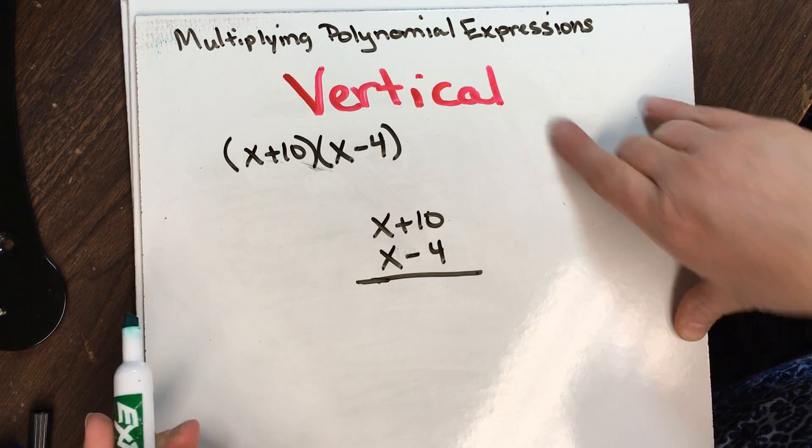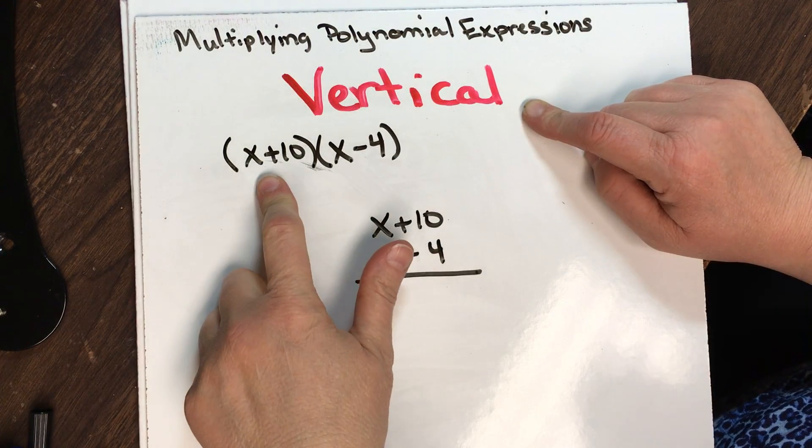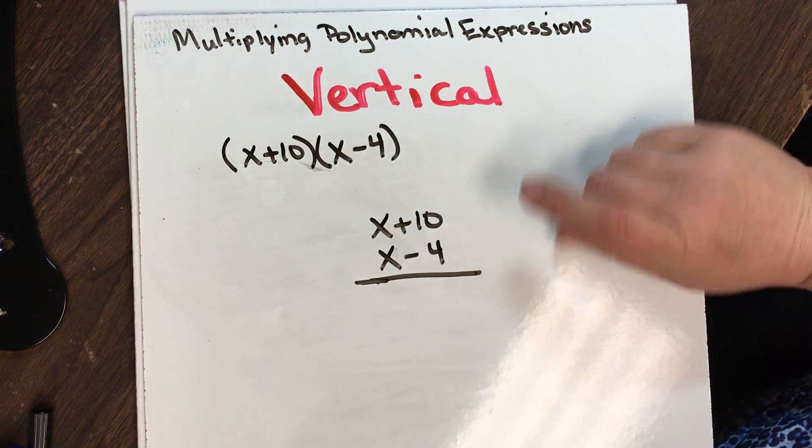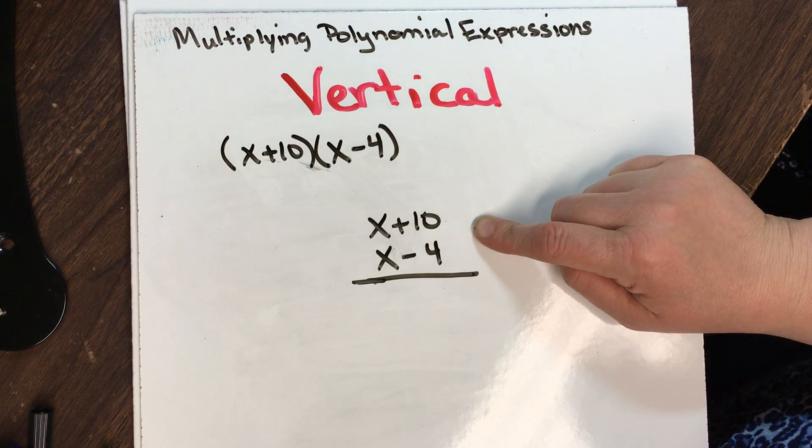This time we're multiplying polynomial expressions using the vertical method. We have x plus 10 times the quantity x minus 4. I've already stacked them vertically, and we're going to work them out.